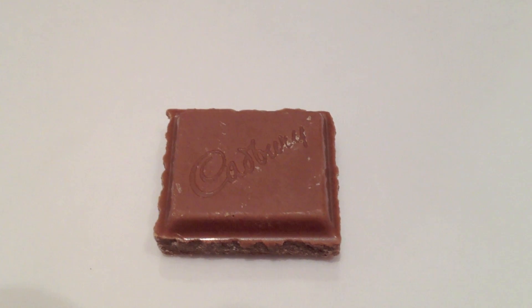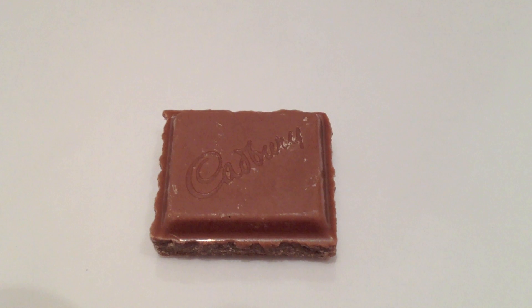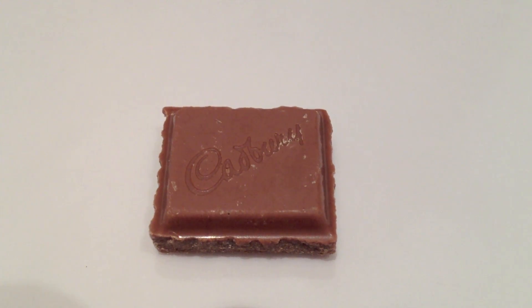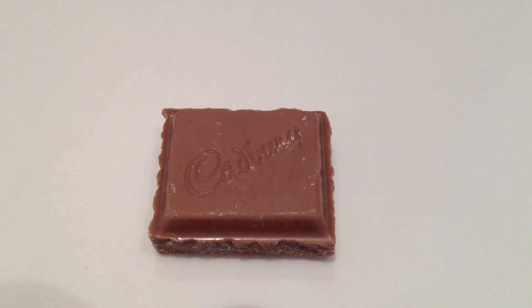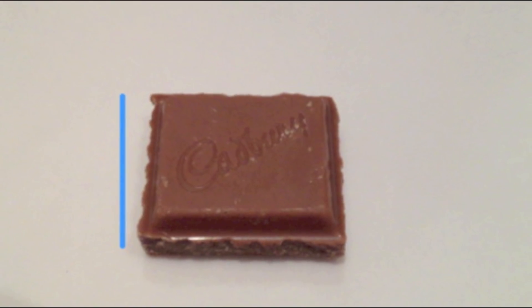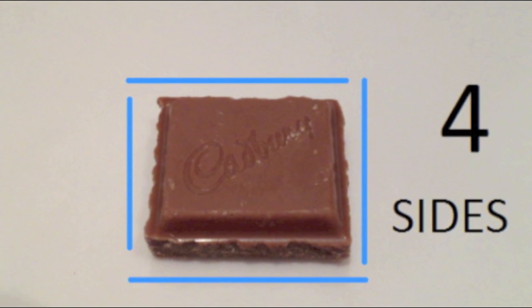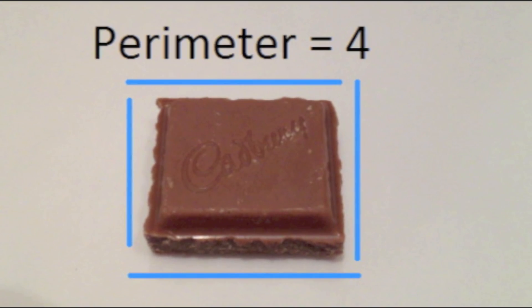What about the perimeter? The perimeter measures the combined length of the shape's edges. This chocolate square has one, two, three, four sides, so it has a perimeter of four.